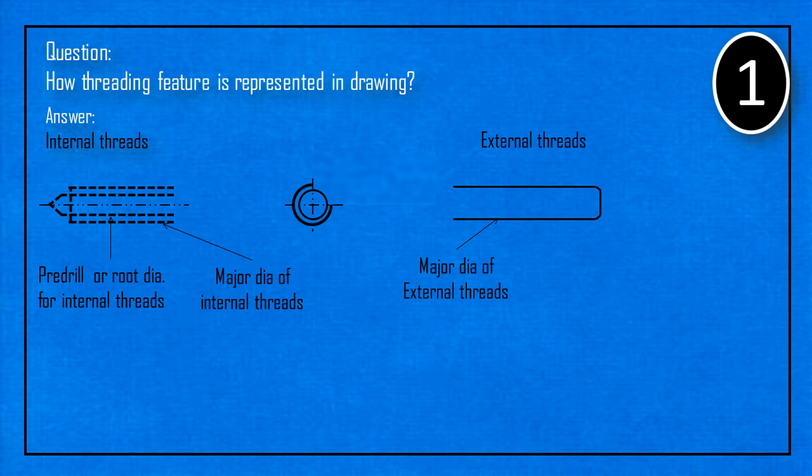The major diameter of external threads is shown like this. The minor diameter is shown this way. This is another view of external threads. Observe the way it is different than internal threads.